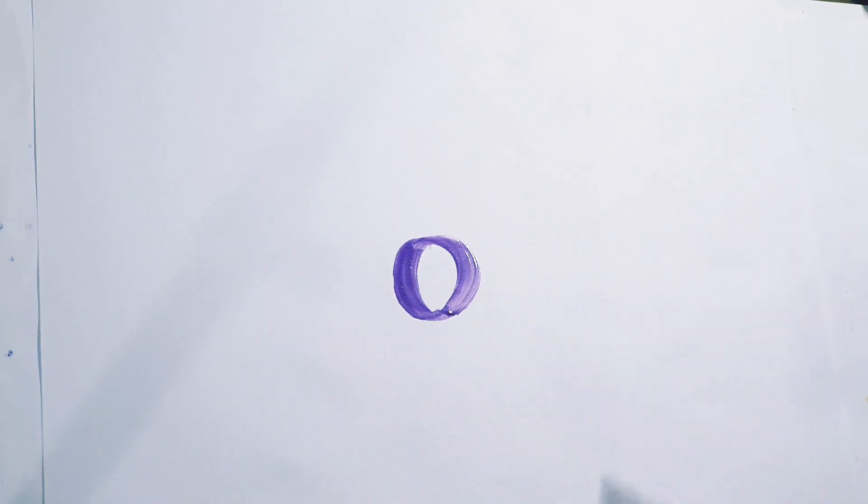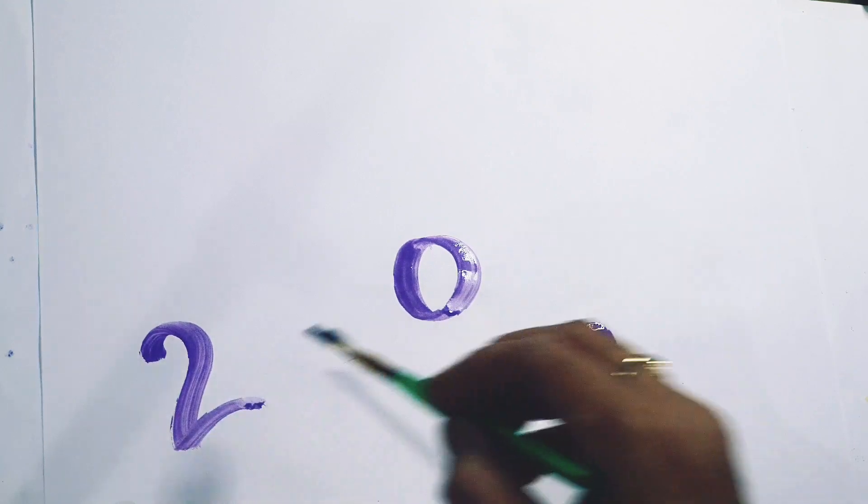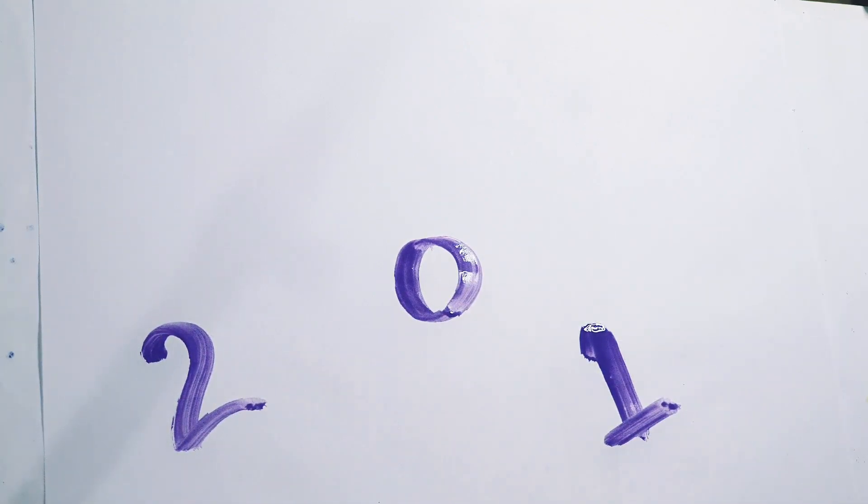Purple color. 0, Z-E-R-O, zero. 1, O-N-E, one. 2, T-W-O, two.